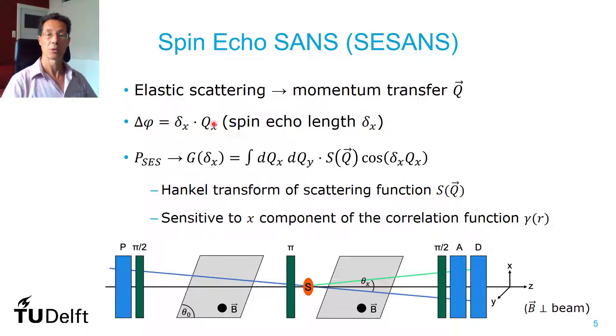And what you now measure is the cosine transform of only one component, which turns out to be for isotropic scattering, a Hankel transformation. And it means that you are only sensitive to the x component of the correlation function in your sample.